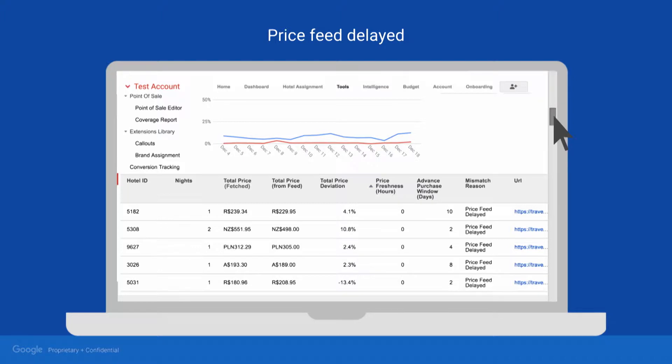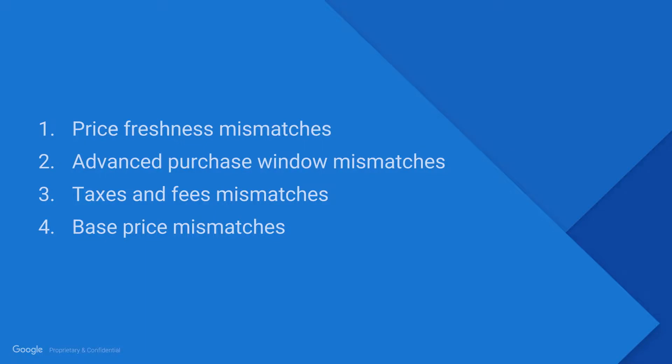Starting by scrolling down to see sample itineraries where Google has seen a price mismatch. Let's walk through how to diagnose four types of undetermined mismatch errors.